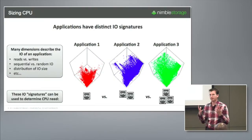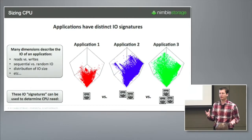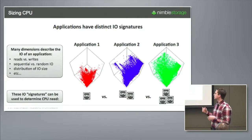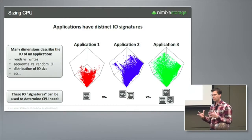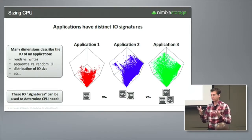What can we do with InfoSight? Applications have very specific IO signatures. Because we have all this InfoSight data, we can actually say for a particular application: what are your reads versus write fractions? What fraction of your IO is sequential versus non-sequential? What is the distribution of IO size? How does that evolve with time? All of these elements we can quantitatively measure, take an ensemble of, and then profile different applications to understand per IO what amount of CPU we're going to need for our different models.